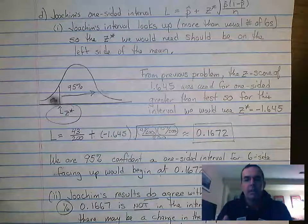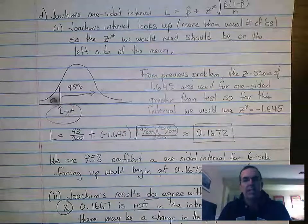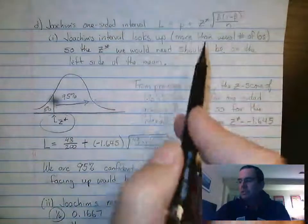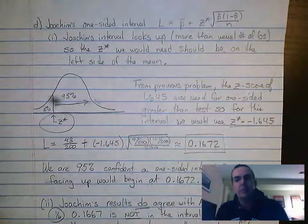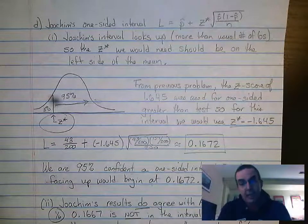What we are looking at here is a student named Joachim getting creative and coming up with a one-sided interval. What that student did was they use this formula that was given: L equals p hat plus z star times the square root of p hat times one minus p hat over n.